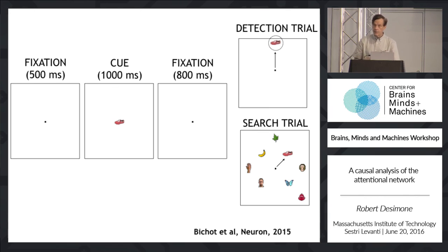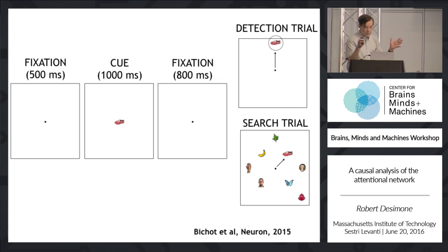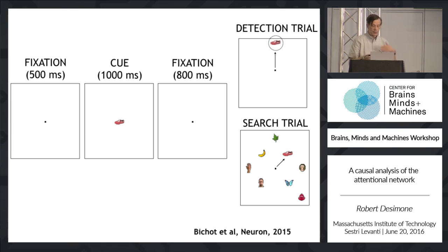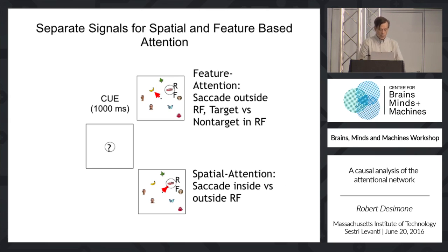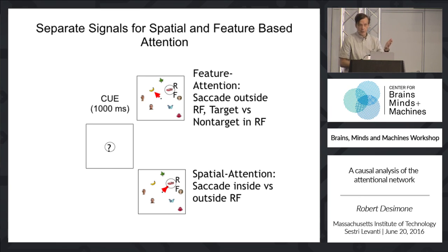The task we use in the monkey is a visual search task in which the monkey uses object information to find a target in a display of multiple objects. The monkey starts by fixating, gets a cue defining an object, then on search trials gets an array of randomly positioned objects and is free to move its eyes until it finds the object that matches the cue. On comparison detection trials there are no distractors — the monkey goes directly to the target.